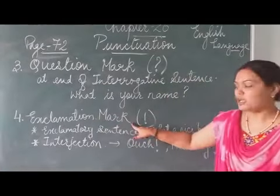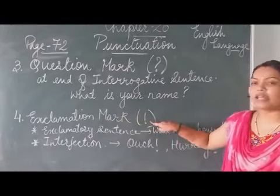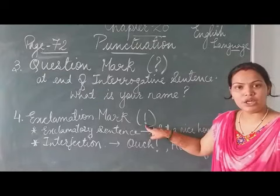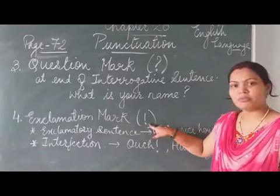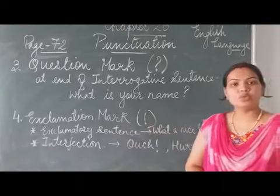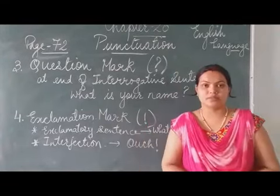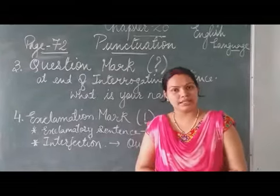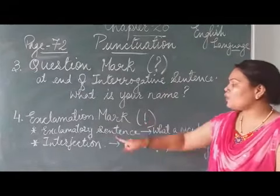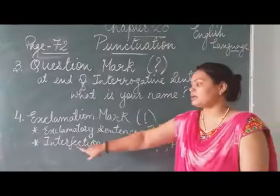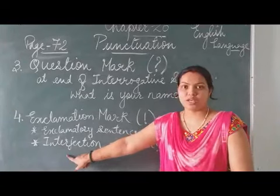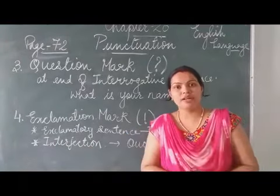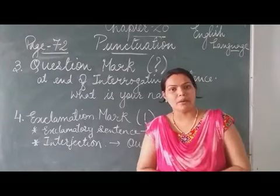Next, exclamation mark. So the exclamation mark sign is one straight line and then one dot — this is your exclamation mark. We use it whenever we are writing an exclamatory sentence; we use the exclamation mark at the end of an exclamatory sentence. We also use it in interjections — after every interjection we use one exclamation mark.